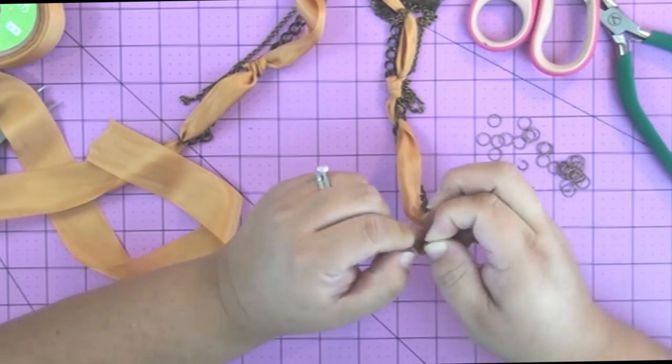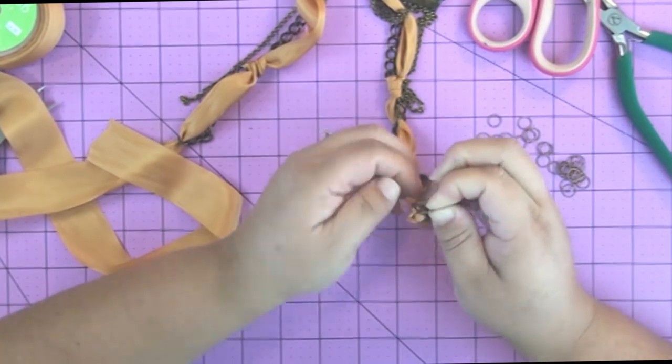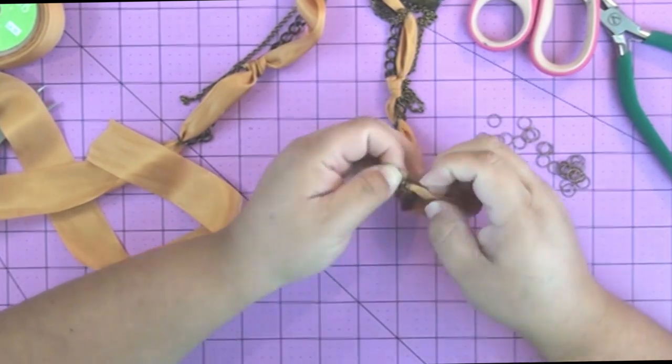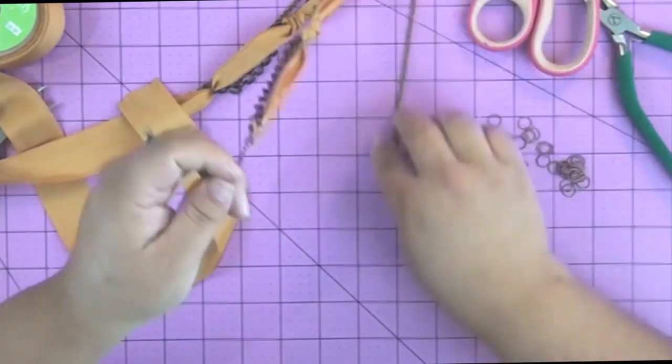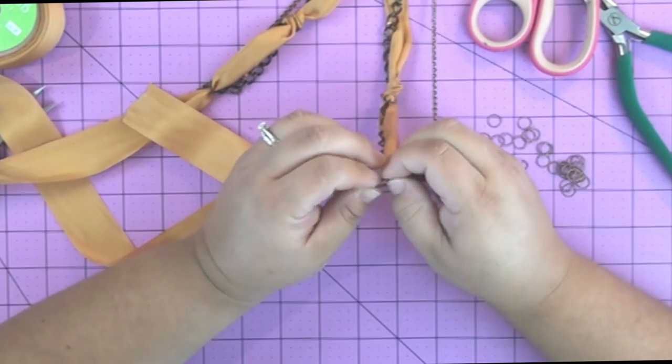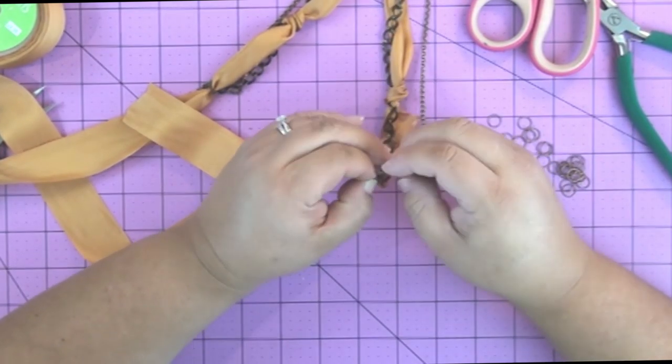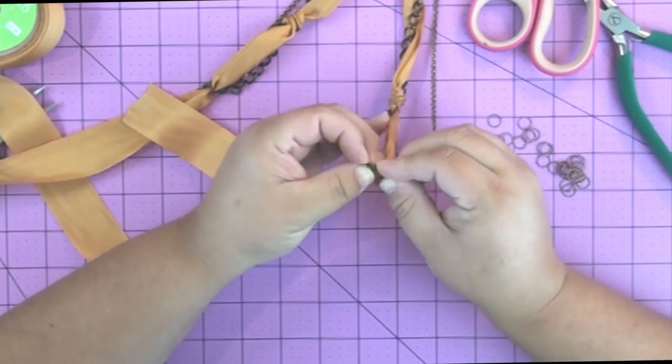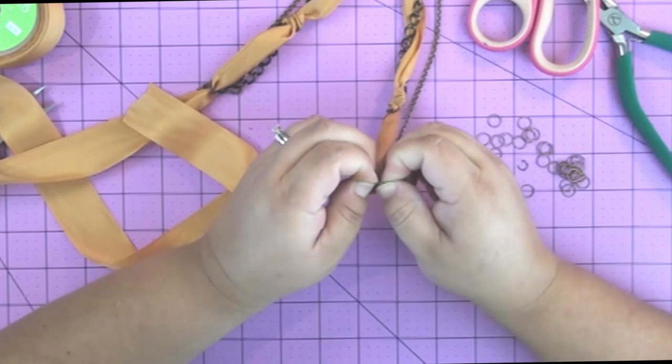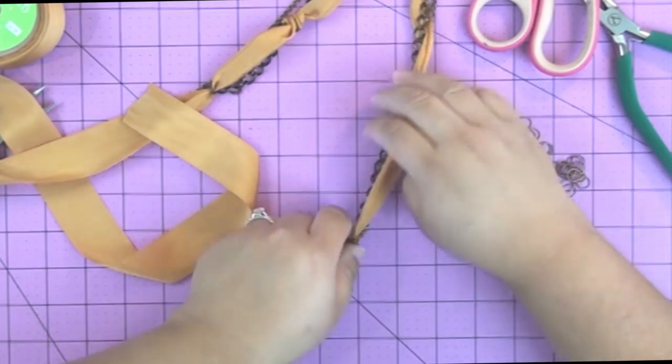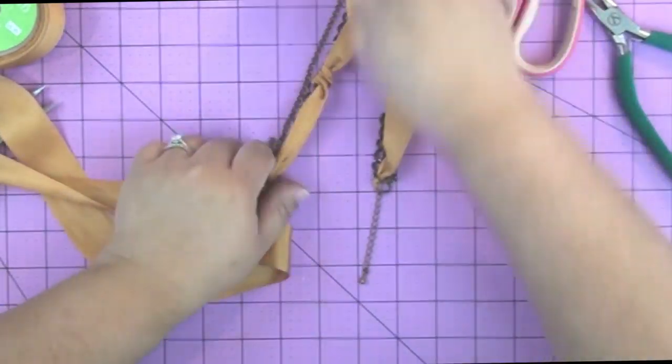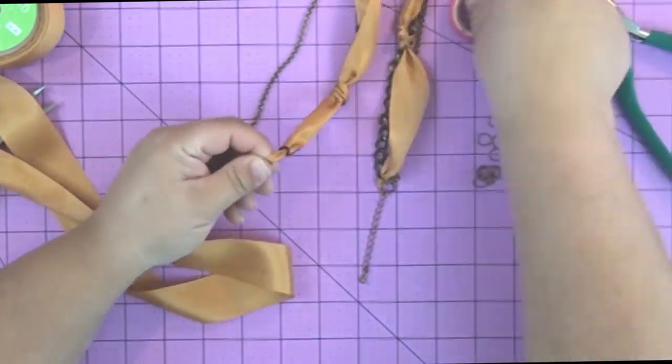So this is a good way to finish off the end of that ribbon, and then I use jump rings to attach. That little crimpy bead has a hole in it, so then I use jump rings to attach the two pieces of chain to the crimpy bead. That's going to hold everything in place and secure, and make sure that all the weight of that pendant is not just resting on that little piece of silk ribbon.